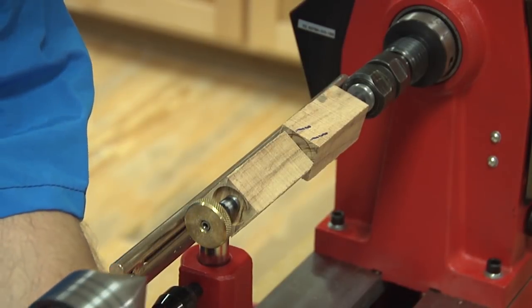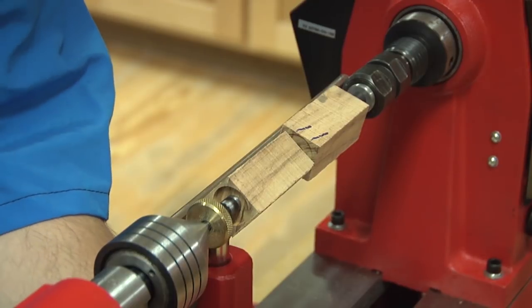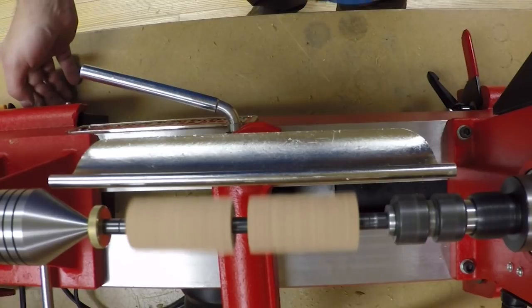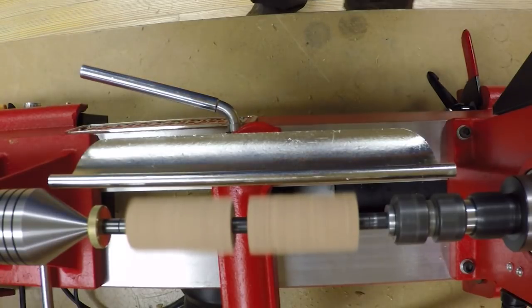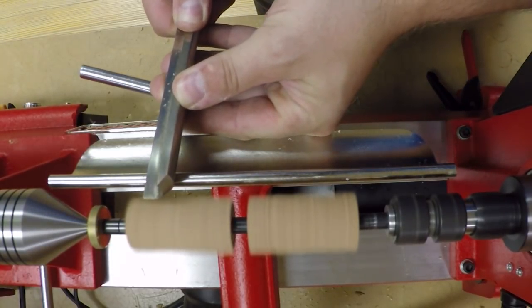Then use the live center to support the end of the mandrel. Switch the lathe on, and because this is a small diameter you can turn the lathe pretty much as fast as you'd like. I like to use somewhere around 2,000 RPMs but any speed is appropriate.